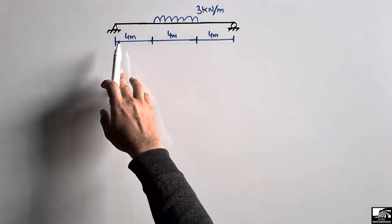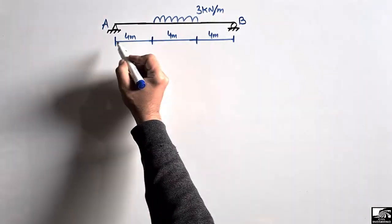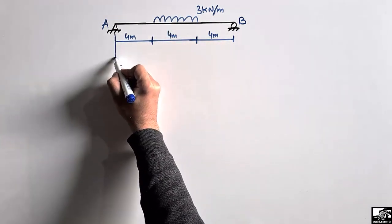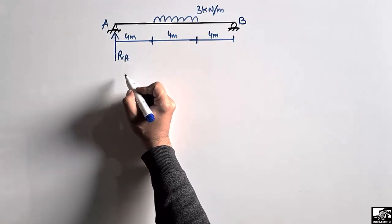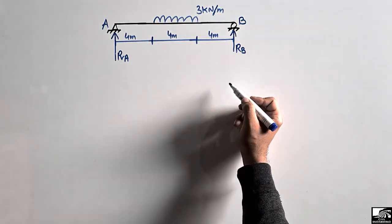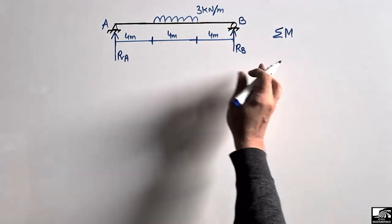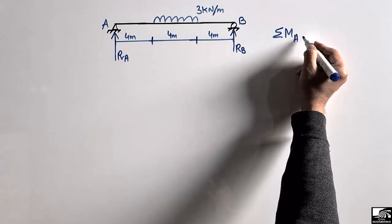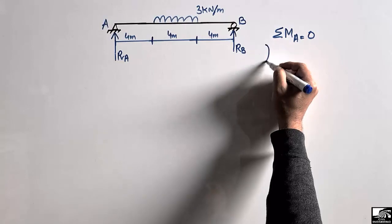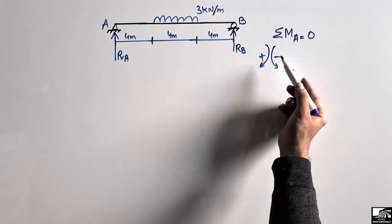First, we find the support reactions. Let's call the supports point A and point B. There is no horizontal load acting on this beam, so we only have vertical loads, giving us vertical reactions RA and RB. To find the support reactions, we consider the summation of moments at any point equal to zero. Taking moments about point A: clockwise moments are positive, anti-clockwise moments are negative.